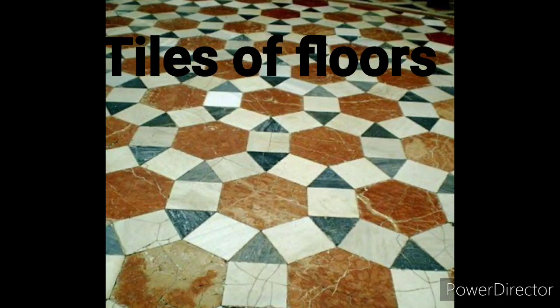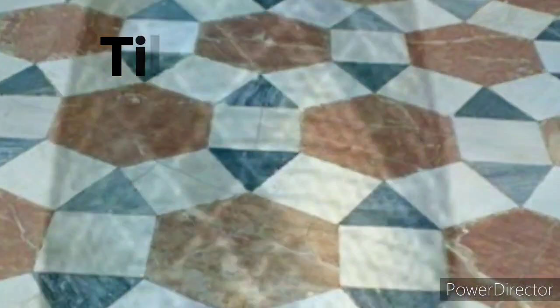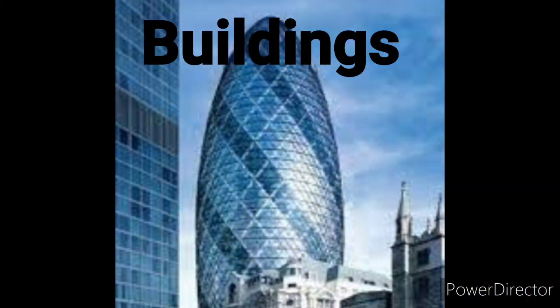The next important example is tiles of a floor. Tessellations are in your house. Buildings, big buildings are also tessellations.